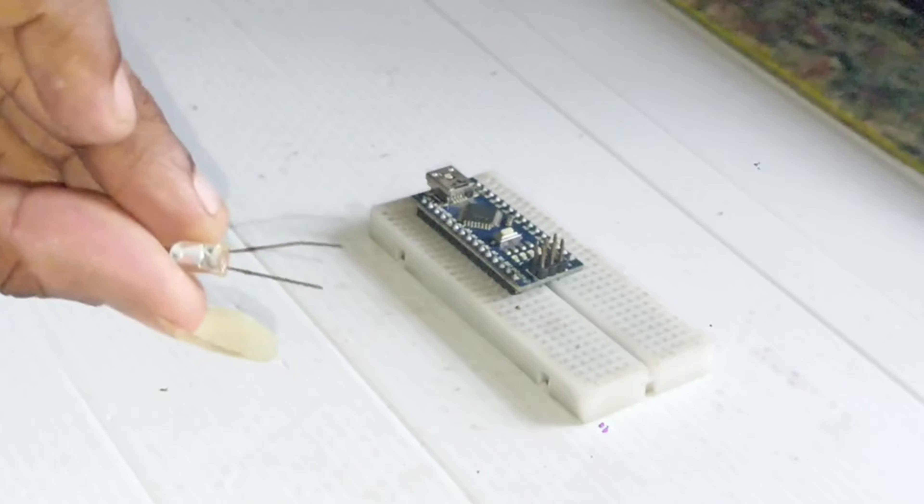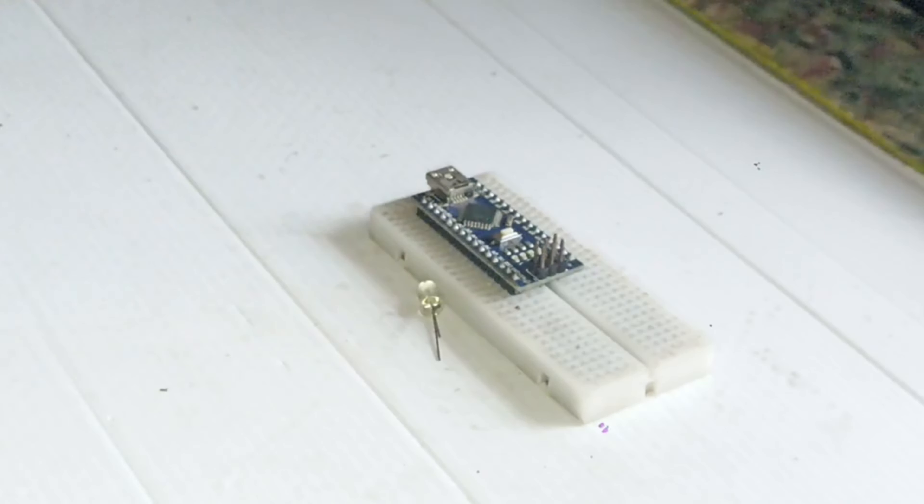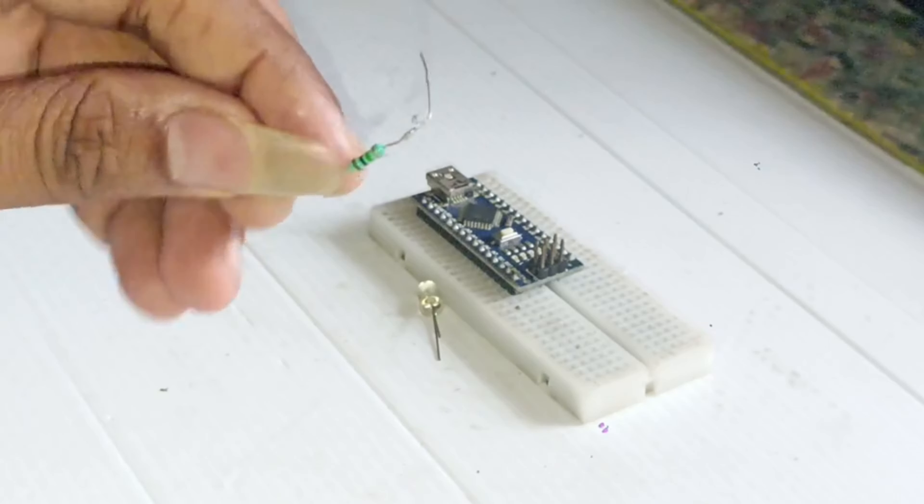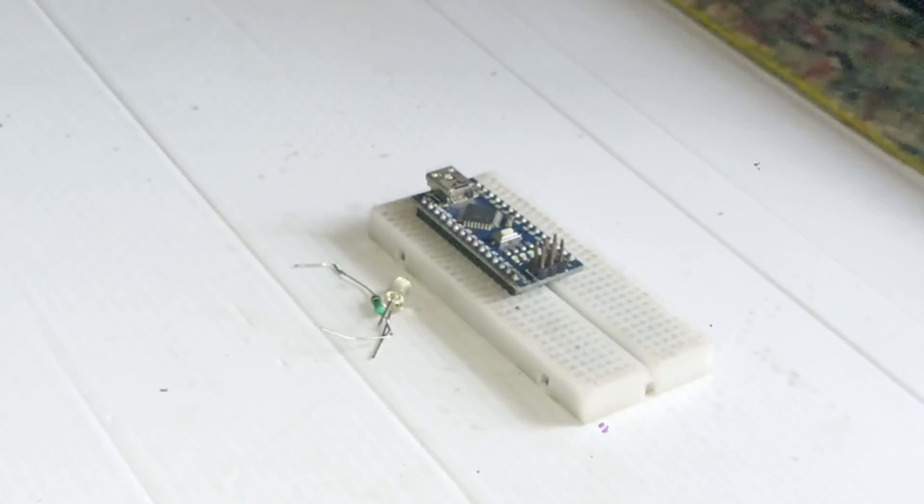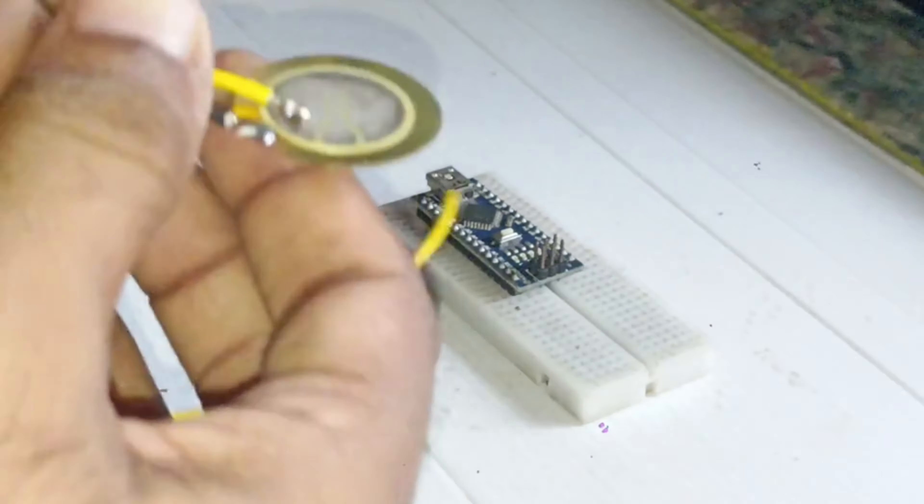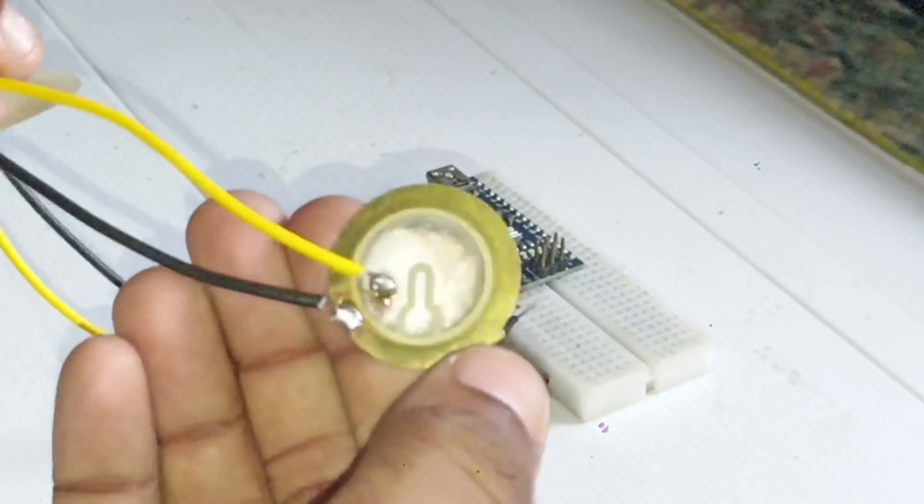We need an LED light, you can use any color, and we need a one megaohm resistor. It will be connected between the piezo sensor. This is how we have soldered it perfectly, right? So now let's check out how this is working.